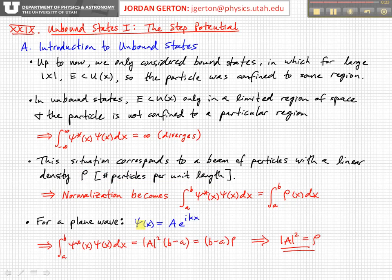If we basically consider a plane wave solution — A times e to the ikx, where A is the amplitude and e to the ikx is the oscillating part with i being the imaginary number — and we integrate that between A and B, we just get A squared times (B minus A), and so we see that that equals (B minus A) times the density.